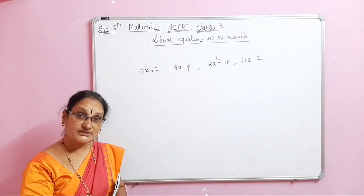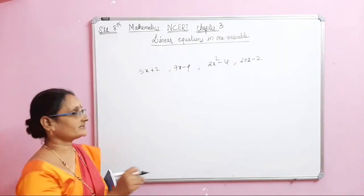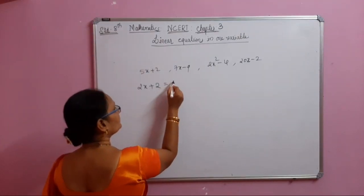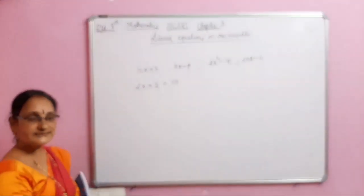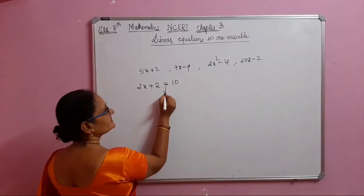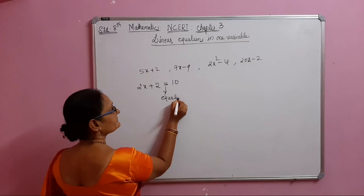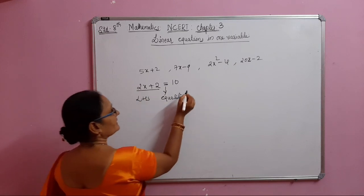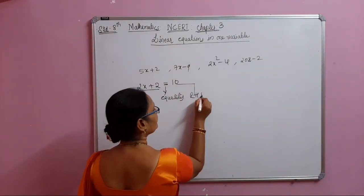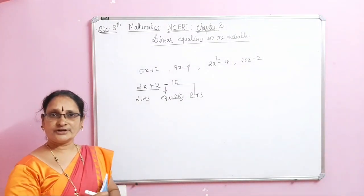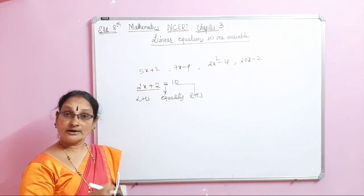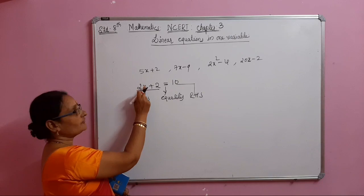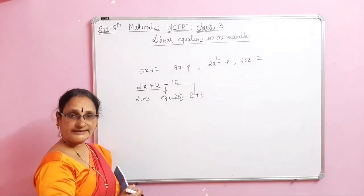So what kind of algebraic expressions are linear equations? Consider 2x plus 2 equal to 10. Here we have an equality — this is the LHS and this is the RHS. A linear equation must have only one variable of power 1. This is a linear equation.